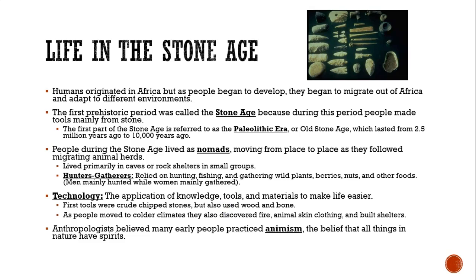Humans originated in Africa, but as people began to develop, they started to move out of Africa and adapt to different environments. People used Beringia to start moving to other parts of the world. The first prehistoric period is called the Stone Age. During this period, people made tools mainly from stone, which is why it's called the Stone Age.